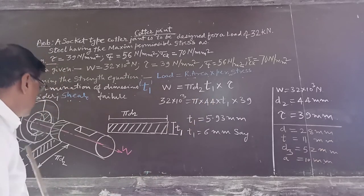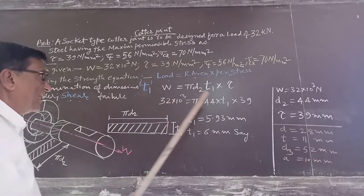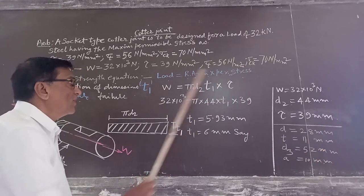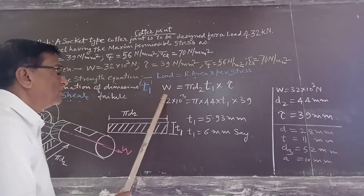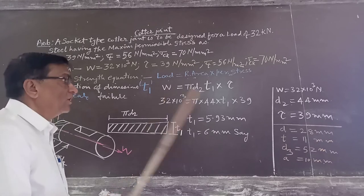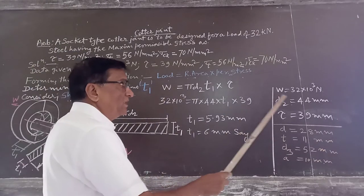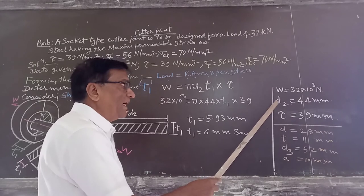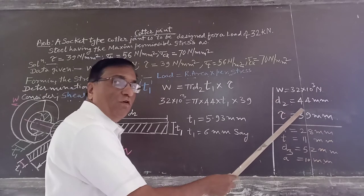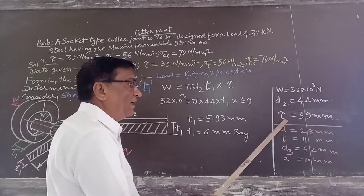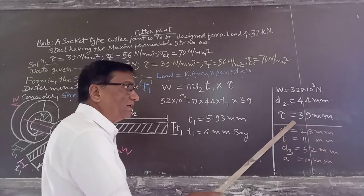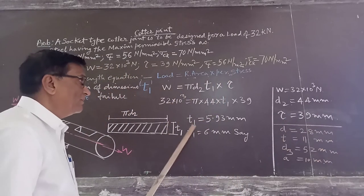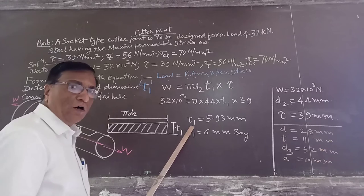As the failure is in direct shear, we will use permissible shear stress tau. W is the value of the applied load, which is 32 into 10 raised to 3. D2 has already been calculated as 44 mm, and the value of tau is given as 39 N/mm². From this equation, we will calculate T1.